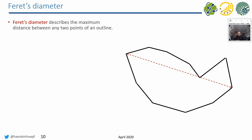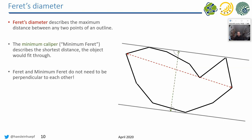And then there is Ferret's diameter, and it describes the maximum distance between any two points of an outline. So that's the definition of it. That's kind of a descriptor of extension of an object. The minimum caliper, or sometimes called the minimum Ferret, describes the shortest distance of a caliper where the object would still fit through. And the important thing to keep in mind here is that they don't have to be perpendicular to each other. So they can be in different directions.